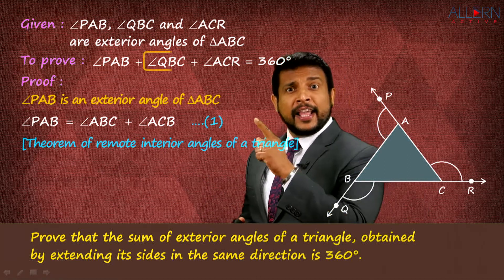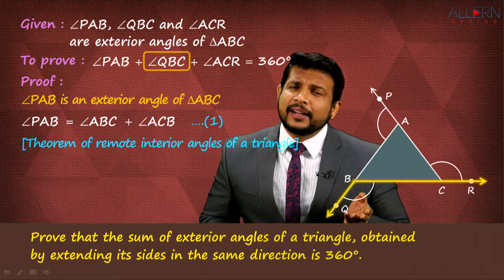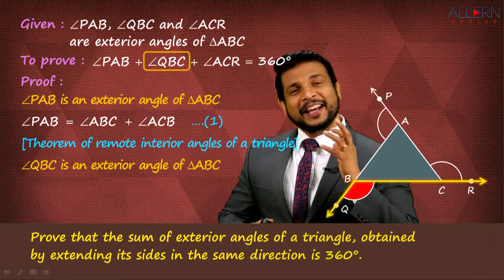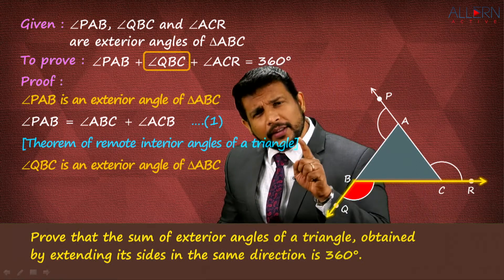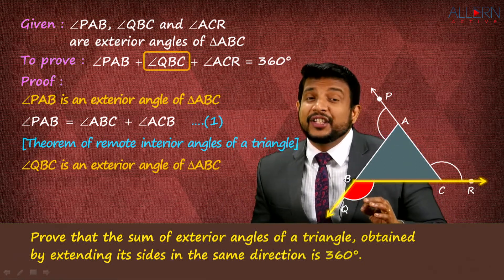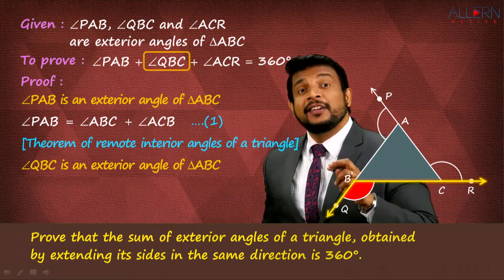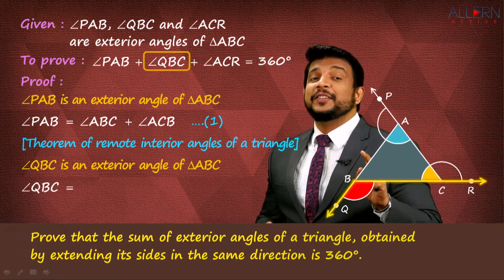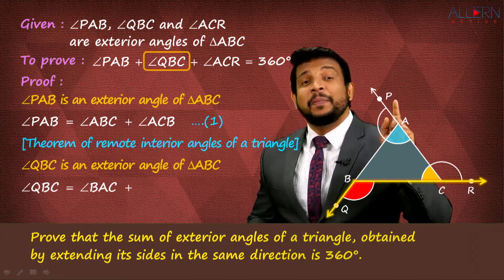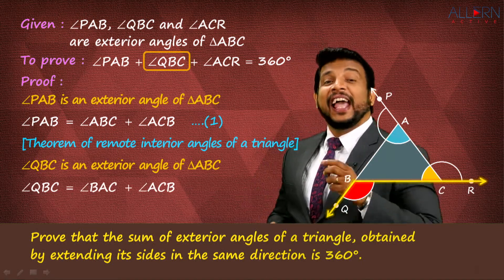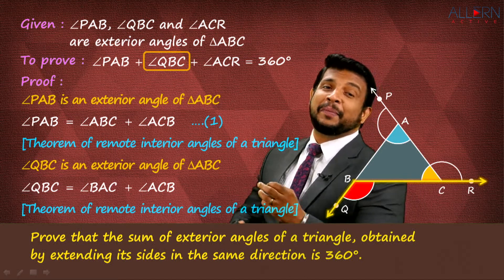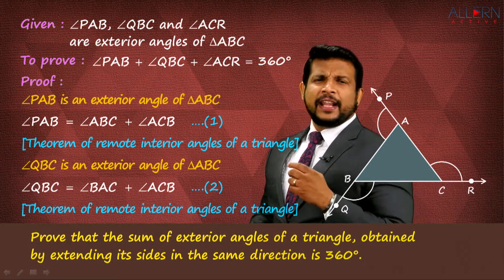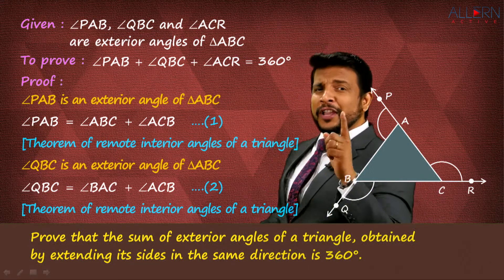Now, angle QBC is also an exterior angle of triangle ABC. Therefore, angle QBC equals the sum of its remote interior angles: angle BAC + angle ACB. That is our Result 2. The reason remains the same — theorem of remote interior angles of a triangle.